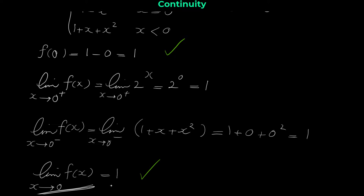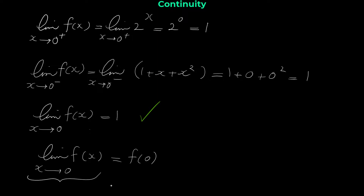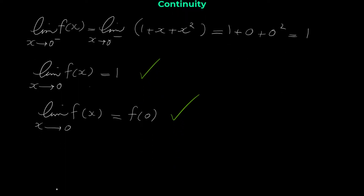We can conclude that this function is continuous at 0. The limit of f of x when x approaches 0 equals f of 0, both equal 1, so the third condition is satisfied and f of x is continuous at 0.